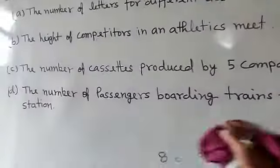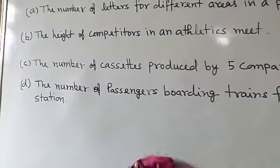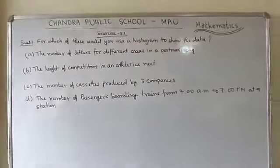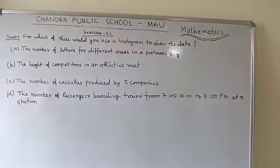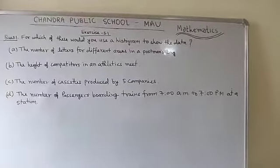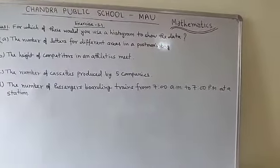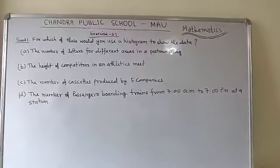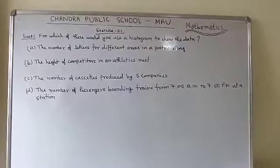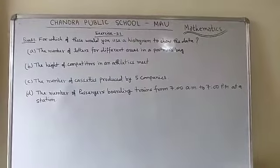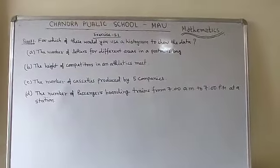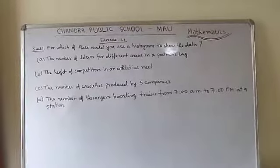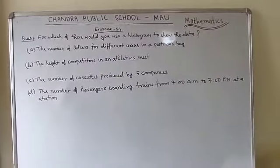So, we can make the histogram for conditions B and D, because we can make group data for those. For conditions A and C, we are not able to make the histogram because we cannot make groupings of the data. That is the solution to this question.